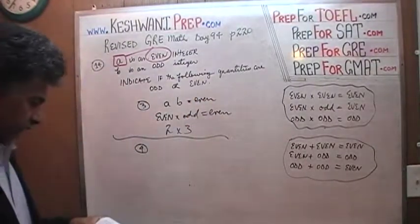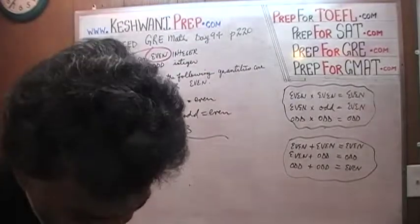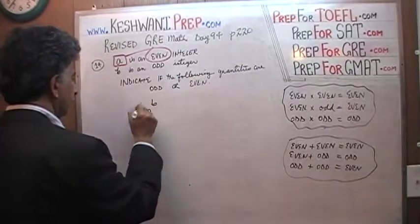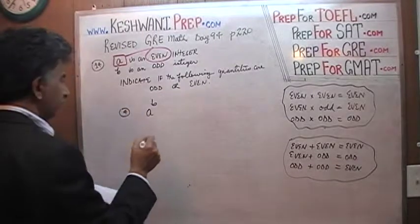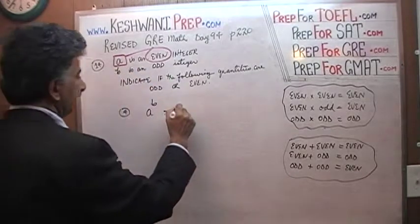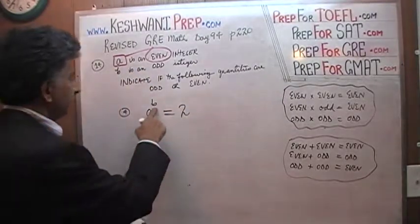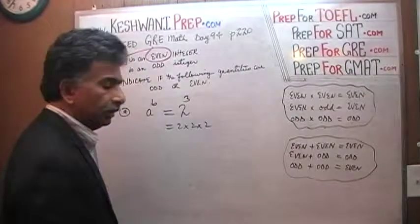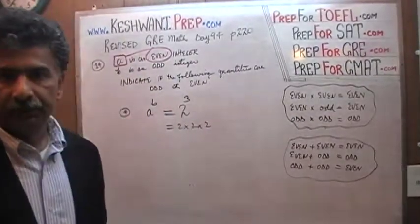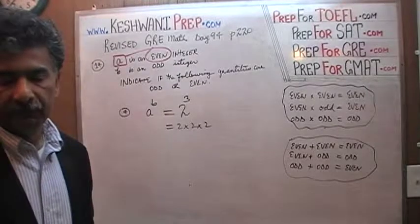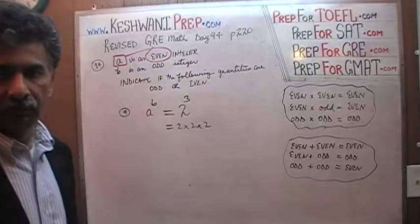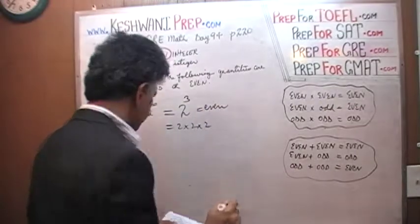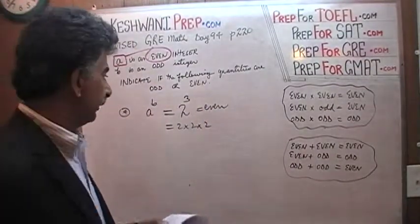Number four is a raised to b. Let's plug in numbers: a is even so let's use 2, and b is odd so let's use 3. Two raised to 3 is simply 2 times 2 times 2 — a whole bunch of even numbers. Regardless of what the power is — whether it's 3, 5, 7, or 13 — you have a bunch of even numbers being multiplied together, so the result is going to be even. It doesn't matter what the exponent is; the result will be even.